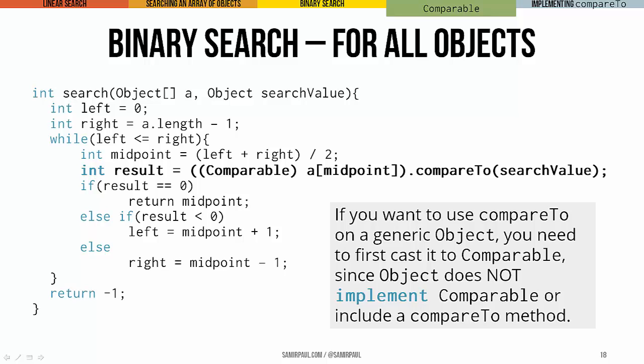If you take a look here, if we're trying to do a binary search on this array of objects, you can see what that ends up looking like. We'll store our comparison result into a variable called result. And in this case, we're casting the element that we're looking at, the midpoint element, to comparable so that we can use the compareTo method. Other than that, it looks very much the same as what we had in the int version of this method.